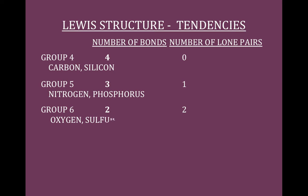Now we look at Group 6 — oxygen, sulfur, tellurium, and so on. When you're done, in a molecule there should be two lone pairs left over on the oxygen and the sulfur, and there should be two bonds. You can see a pattern: 4 to 3 to 2 bonds, and 0 to 1 to 2 lone pairs.